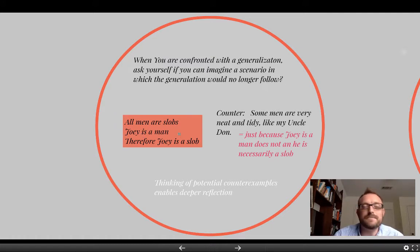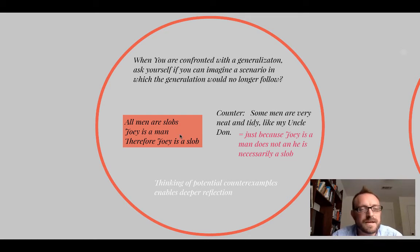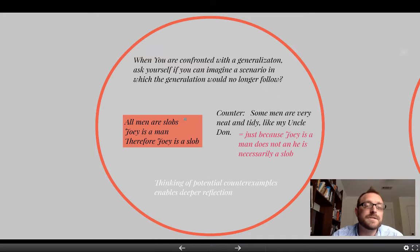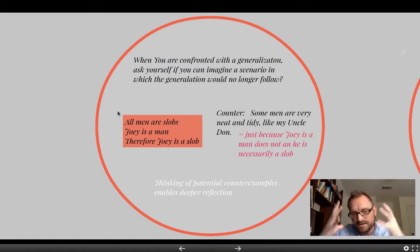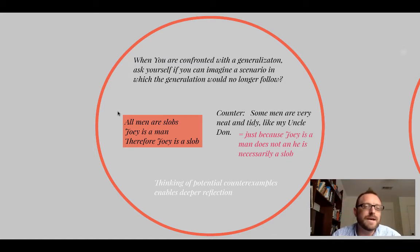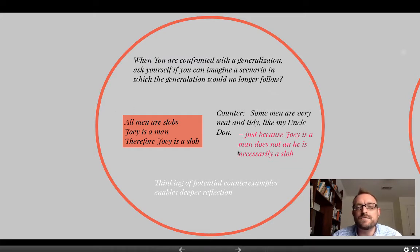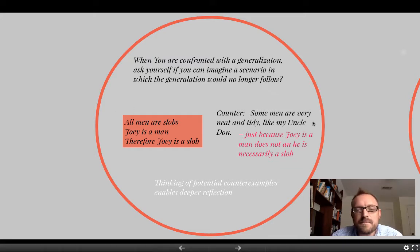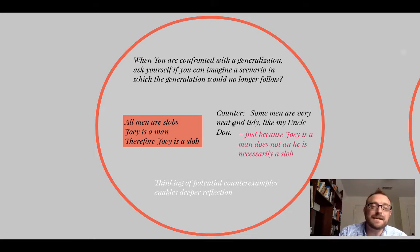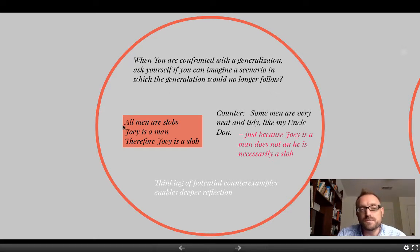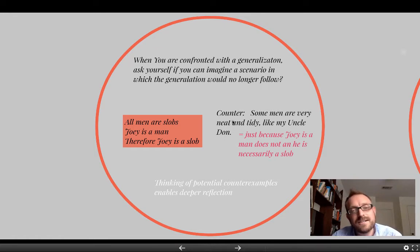Is Joey a man? We'll take it on faith that Joey is a man. But what about the claim 'all men are slobs'? Immediately, you'll notice we have a quantified statement — we're predicating slobbery to all men. Can I come up with a counterexample? Imagine someone says, well, some men are actually very neat and tidy — like my Uncle Don. This counterexample shows that the first premise is false. Because if all men are slobs, Uncle Don must be a slob, but he's not. So just because Joey is a man does not mean he's necessarily a slob. You could certainly say many men are slobs, but not all men.